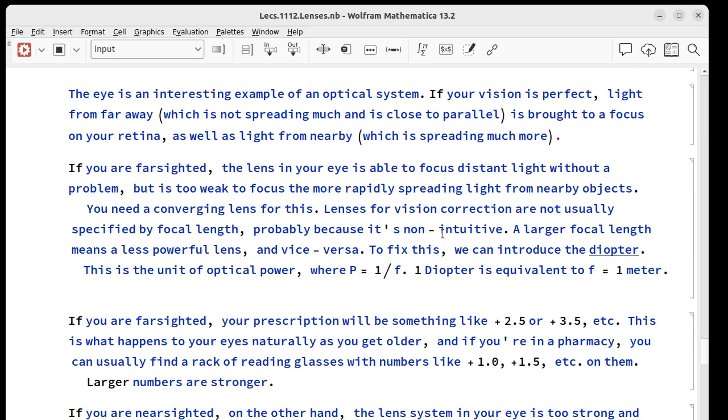What about if we look at your eye as an optical system? Well, if your vision is perfect, light from very far away, so essentially parallel light, is brought to a focus on your retina. And also light from a book you hold in your lap is brought to a focus on your retina, even though it's spreading out a lot more.